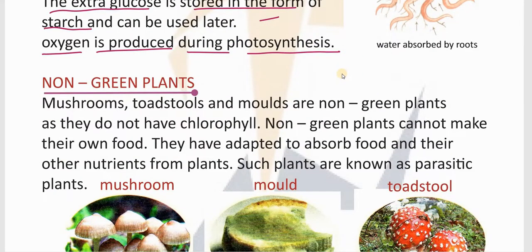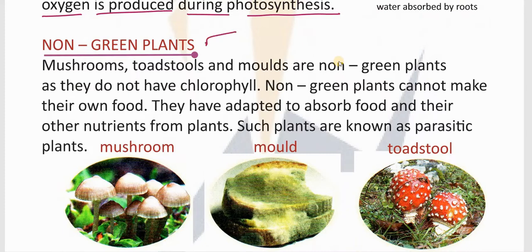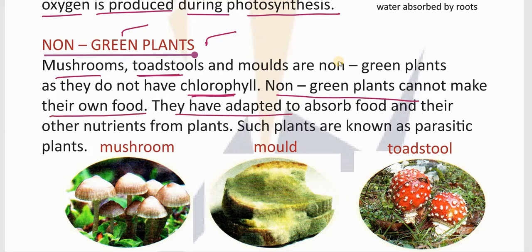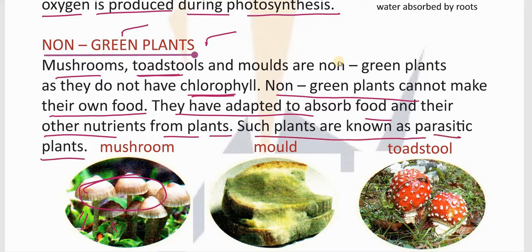Non-green plants: mushrooms, toadstools, and moulds are non-green plants as they do not have chlorophyll. Non-green plants cannot make their own food. They have adapted to absorb food and nutrients from other plants. Such plants are known as parasitic plants — parasites. Parasites live alongside or upon another living being. Examples: mushrooms, mould, and toadstools. Remember, toadstools are very dangerous and poisonous — be careful.